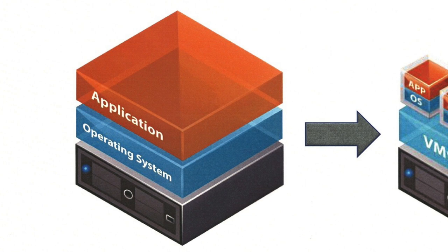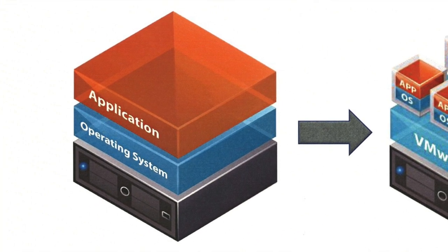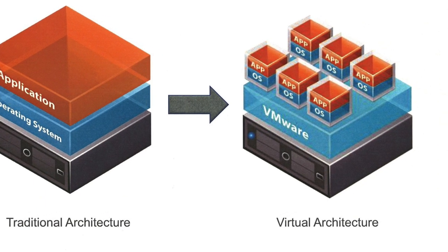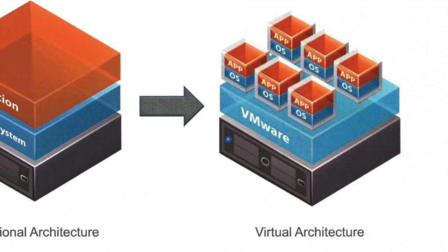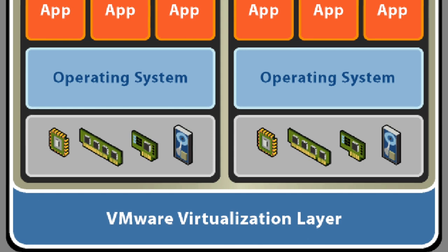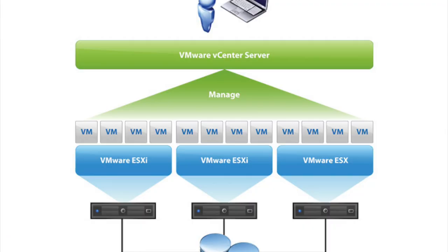Nowadays, physical servers have been replaced with what are called virtual servers. Think about a physical computer — it has a CPU, RAM, a graphics card, and an operating system. Well, a virtual machine is exactly the same. It's a container or image that contains a virtual CPU, virtual RAM, a virtual graphics card, and then an operating system running inside of it. And you can run multiple virtual machines within one physical machine.